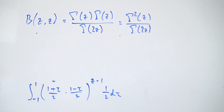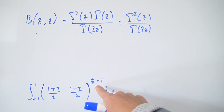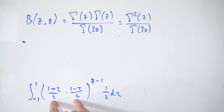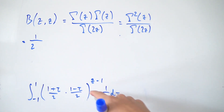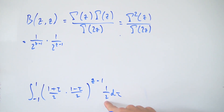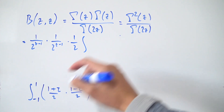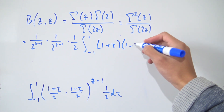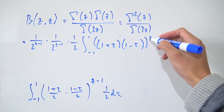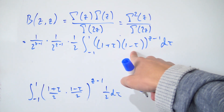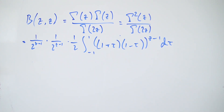Bringing the 2s out to the front: we get 1 over 2 to the z minus 1 from each factor inside, plus a one half from dt — combining these gives a prefactor. The product (1 plus tau)(1 minus tau) inside is a difference of two squares, which we can write as 1 minus tau squared.